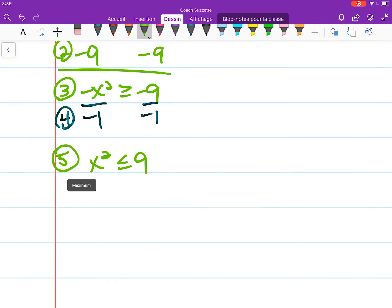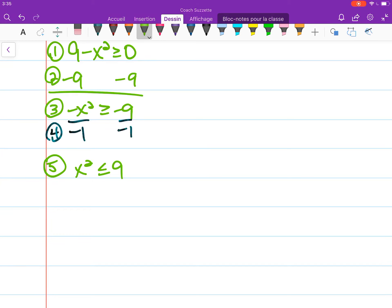Which is to say we need all x values such that when we square them, we get at most 9. That means x needs to be between -3 and 3.